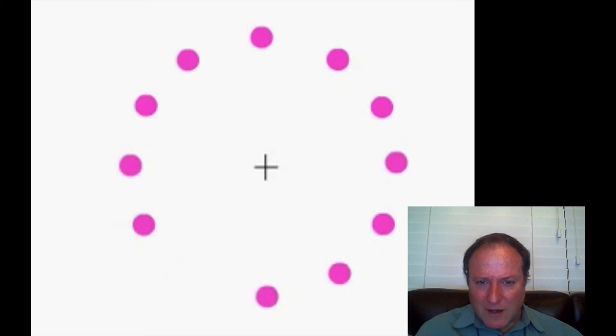But now, if you stare at that central fixation point, the cross in the middle, you should get a vivid sensation, especially as you continue to stare at it. I'm getting it very strongly now, a very vivid sensation of a green dot rotating around this circle.